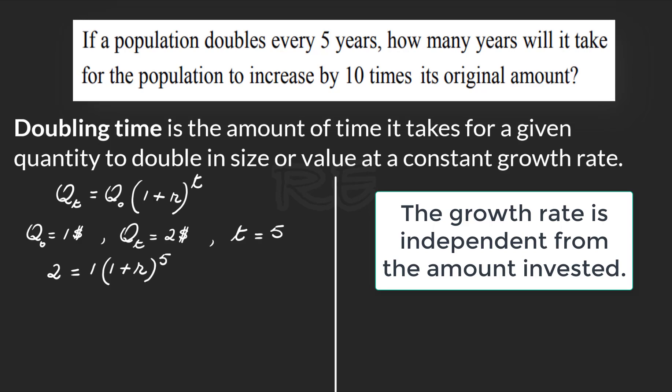Two is equal to one times (1 + r) to the fifth. Take the fifth root of both sides. The fifth root of two is equal to the fifth root of (1 + r)^5, which is 1 + r.